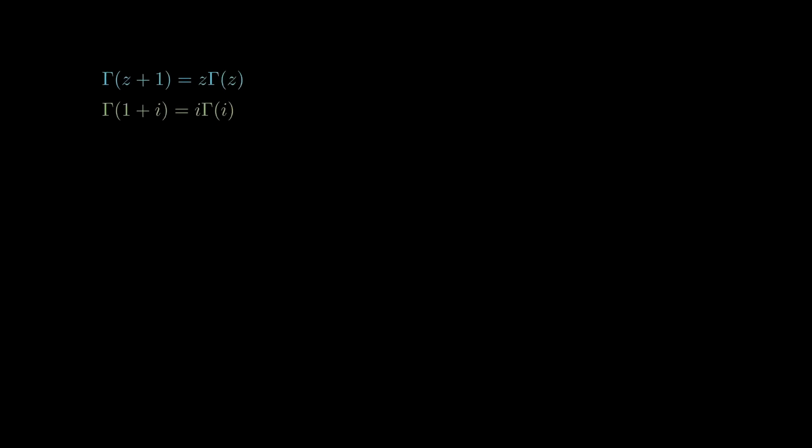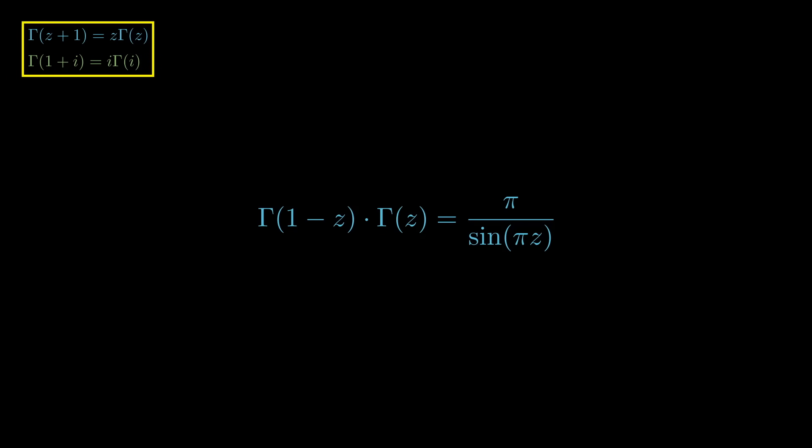Let's save that, we're going to use it later. We're also going to use a quite famous reflection formula using the gamma function. That is, gamma of 1 minus z times gamma z is the same as this fraction. We're not going to get into where this comes from, that's a topic for another day. Likewise, this should extend to complex numbers.